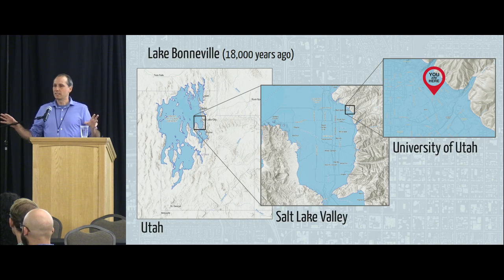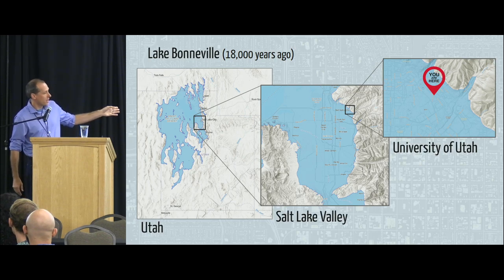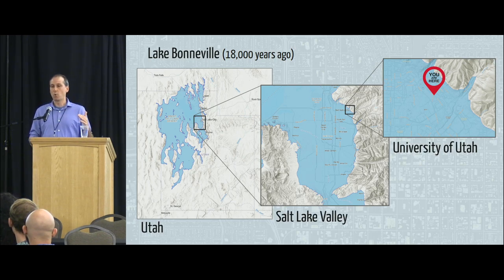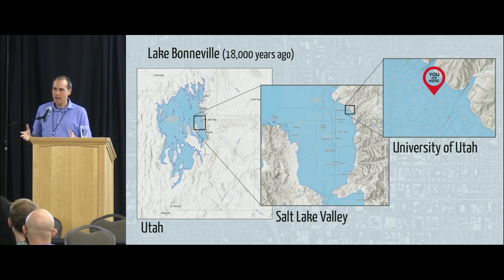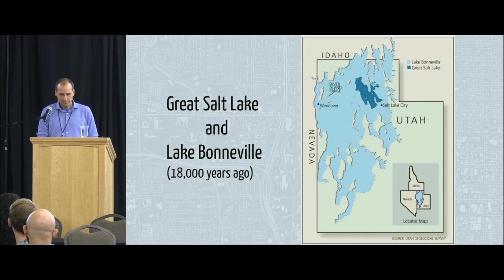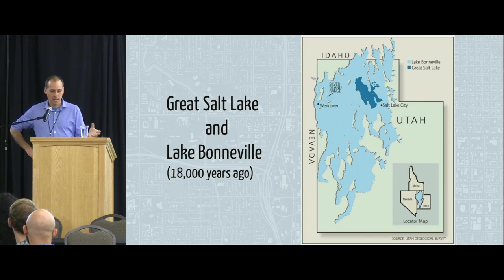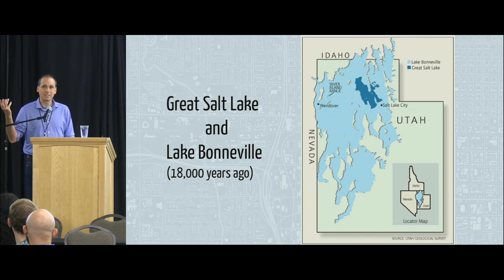If you were sitting in these seats 18,000 years ago, you'd be sitting under 200 feet of water. At that point in time, what was present here in the valley and throughout much of the region was Lake Bonneville. You can see on the map on the right — this is a massive lake. At its deepest point it was 900 feet deep, and it went all the way up into Idaho, over into Nevada. The Salt Lake Valley was mostly underwater. The Great Salt Lake is really what's left of Lake Bonneville.